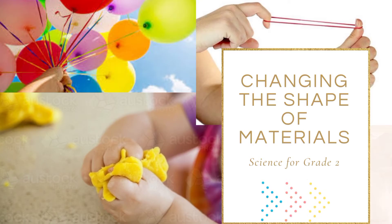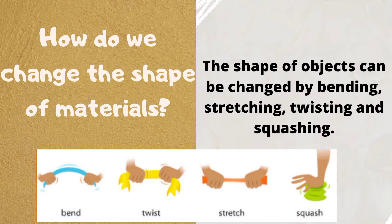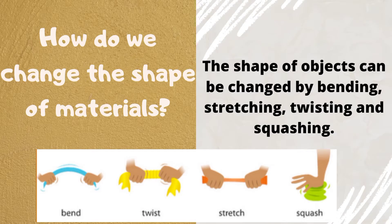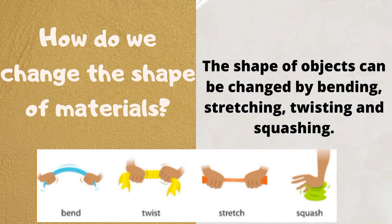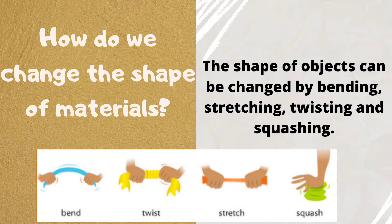All right, how do we change the shape of materials? The shape of objects can be changed by bending, stretching, twisting, and squashing.